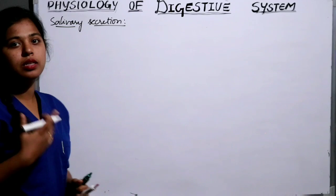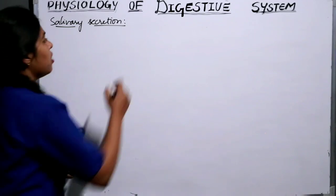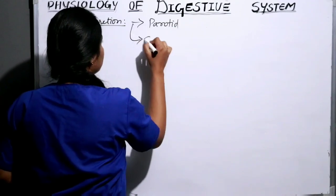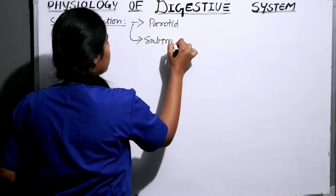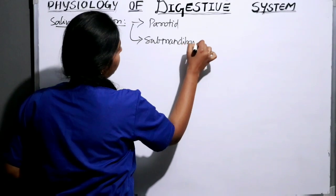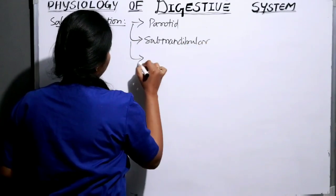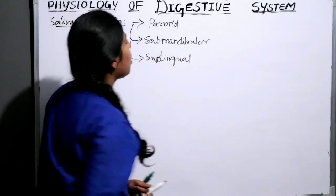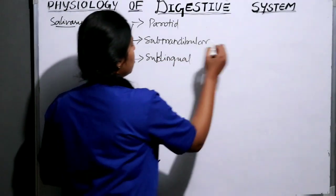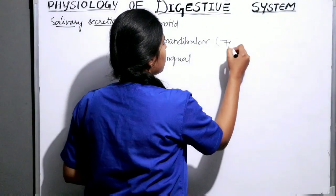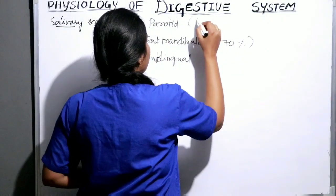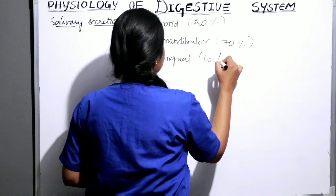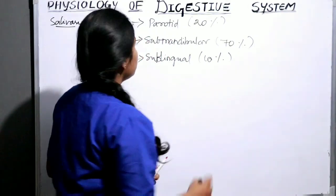Saliva in humans is secreted by three major glands: parotid, submandibular, and sublingual. The submandibular secretes 70% of the saliva, the parotid secretes 10%, and the sublingual secretes 10%.